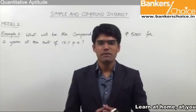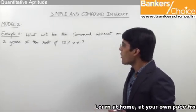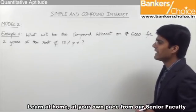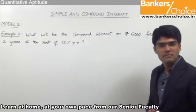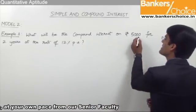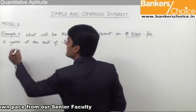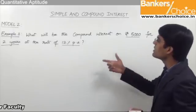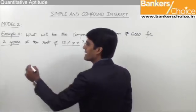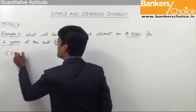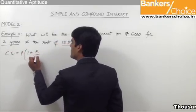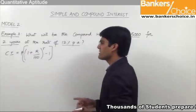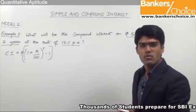Let us now take a simple example based on the calculation of compound interest. What will be the compound interest on ₹5000 for 2 years at the rate of 12% per annum? The principal is ₹5000, time period is 2 years, and the rate is 12% per annum. We need to find the compound interest using CI = P[(1 + R/100)^T - 1].